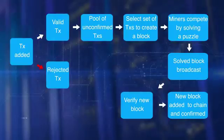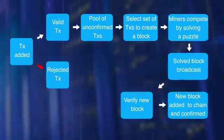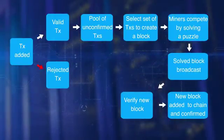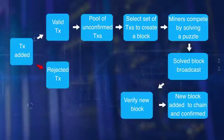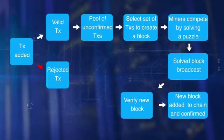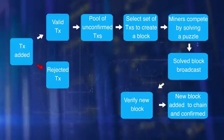Once a miner solves the puzzle, the announcement is broadcast to the network and the block is also broadcast to the network. Then other participants verify the new block. Participants reach a consensus to add the new block to the chain, and this new block is added to their local copy of the blockchain. Thus, a new set of transactions are recorded and confirmed. The algorithm for consensus is called the proof-of-work protocol, since it involves work or computational power to solve the puzzle and claim the right to form the next block.